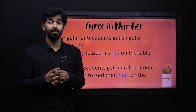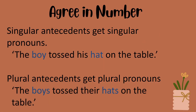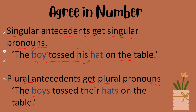We know that pronouns must also agree in number. Singular antecedents get singular pronouns. For example: 'The boy tossed his hat on the table.' We have a singular noun, 'boy,' and hence we are using a singular pronoun. Plural antecedents get plural pronouns. For example: 'The boys tossed their hats on the table.' Here, 'boys' and 'hats' are plural, so the antecedent is also in the plural form.